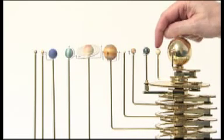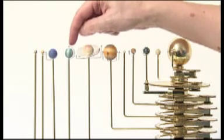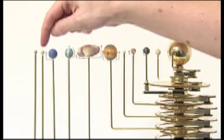Mercury, Venus, Earth, Mars, Ceres, Jupiter, Saturn, Uranus, Neptune, Pluto and Eris.